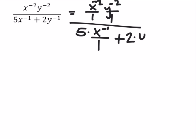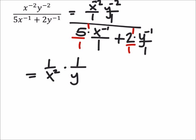Plus two times y to the power of negative one over one. I just need to focus on each specific part. Notice I didn't put the five or the two over one — if it helps you to do that, go ahead. But I'm not reciprocating the five or the two, because neither of those by themselves have negative exponents — they just have a positive exponent of one.